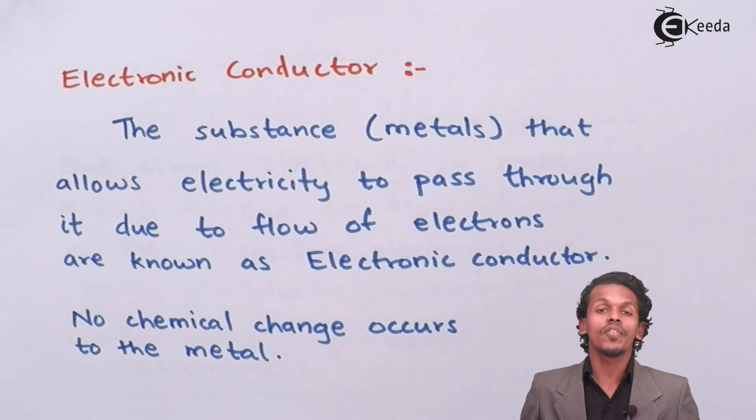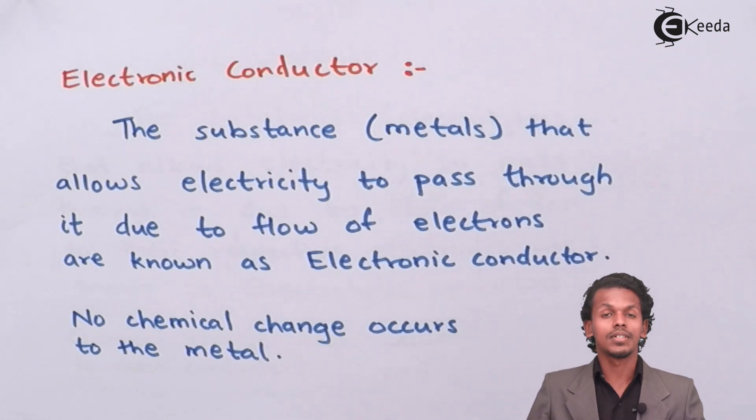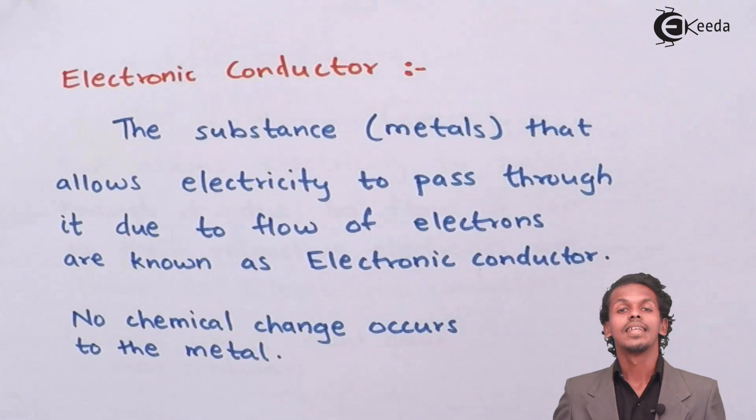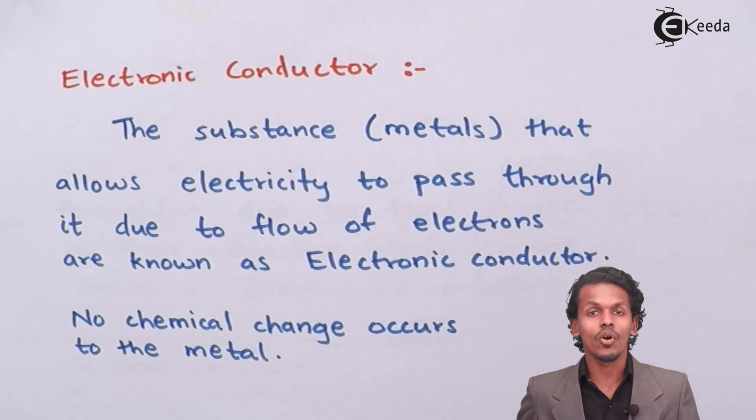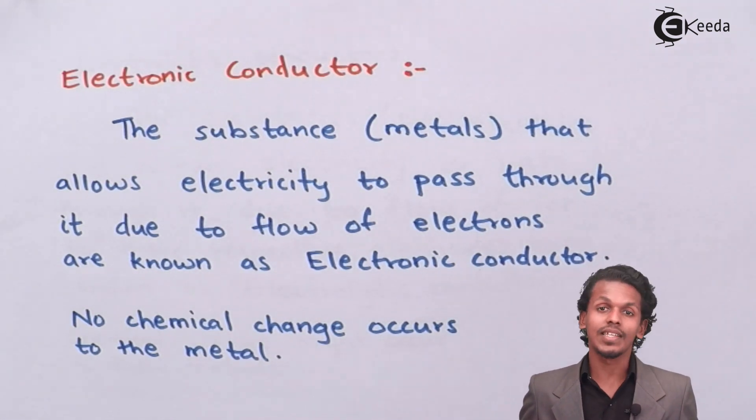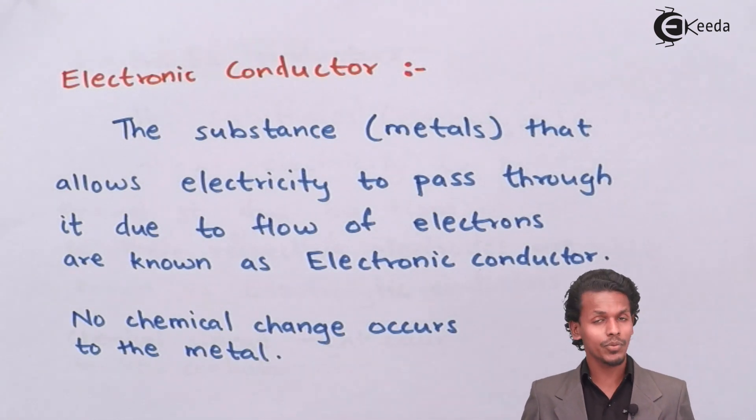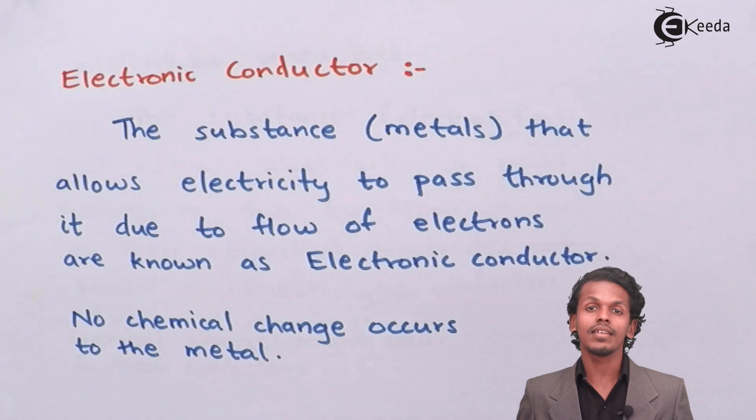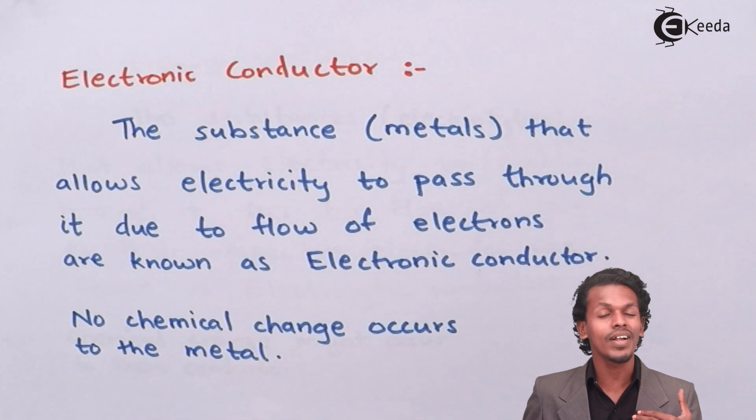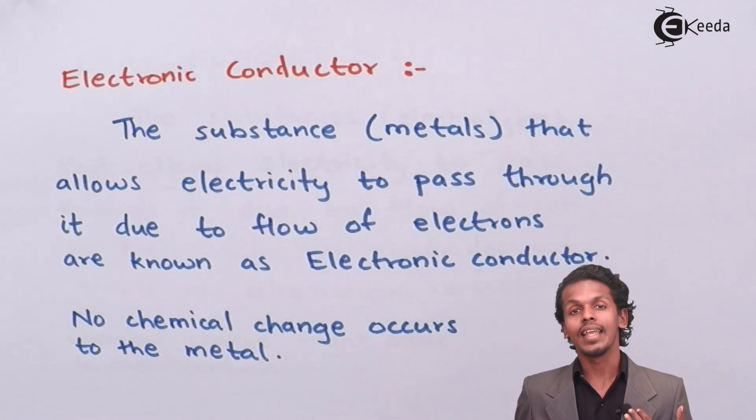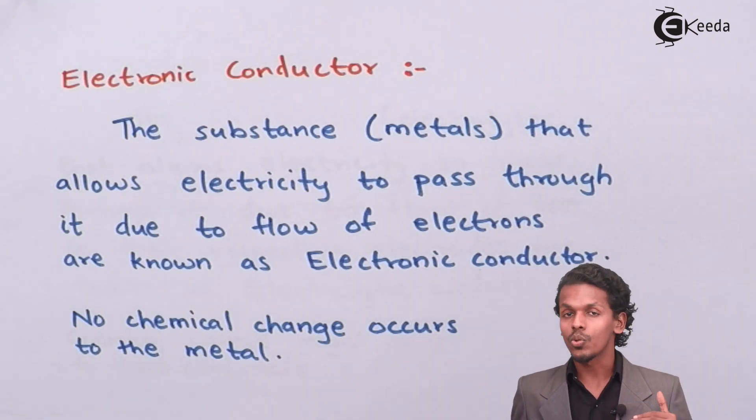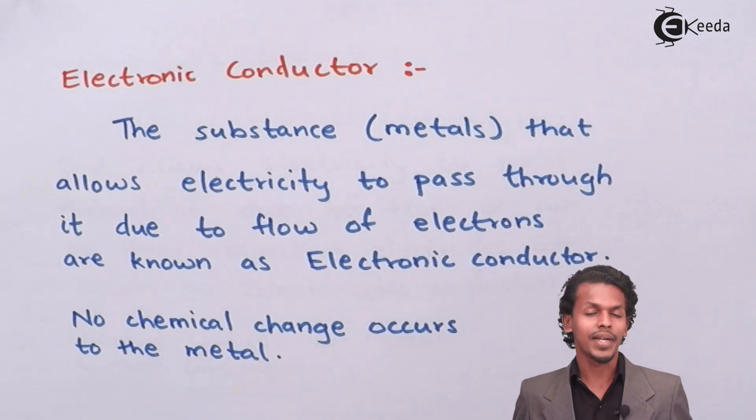Since we know metal consists of many free electrons that help in the conduction of electricity. So if you pass electricity through it, then the many free electrons that are present in it are aligned in one direction, and because of that electricity is conducted through the substance or through the metal.